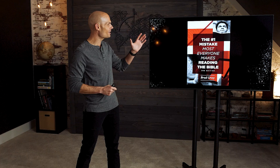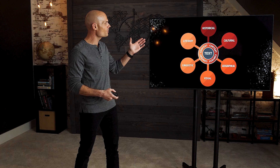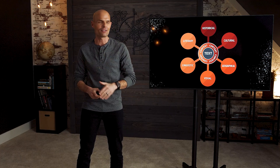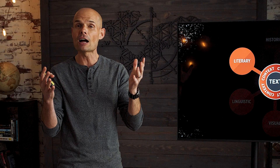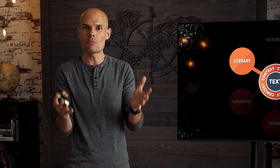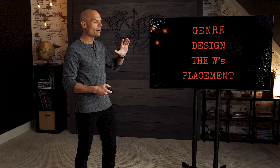We have been doing this series in conjunction with this ebook, and most of you probably have your hands on it. If you don't, you can snag it in the details below this video. We have been working through the six lenses of context, and the only one we haven't tackled yet is the literary one. What has been helpful for me is to break down the literary lens into four parts.